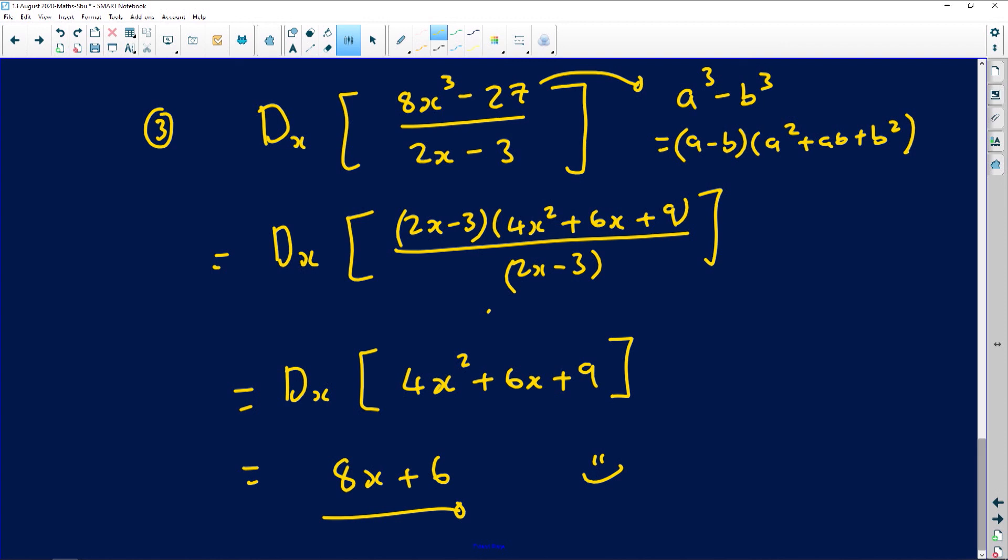So this is actually what you needed to do. You just needed to factorize and find what the factors of 8x cubed minus 27 are. And then once you've done that, you'll notice that one thing cancels the other one. And then you're just left with 4x squared plus 6x plus 9, which you can then derive to get 8x plus 6 because the derivative of 9, which is a constant, will always amount to zero.